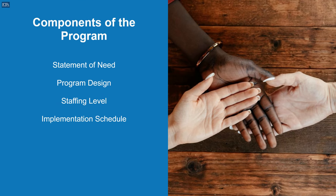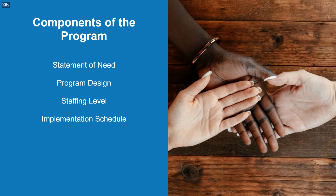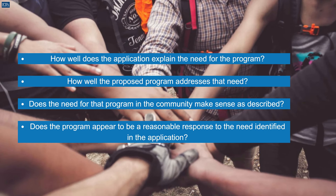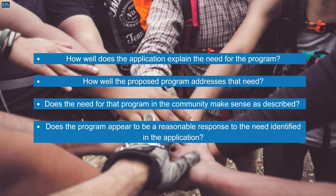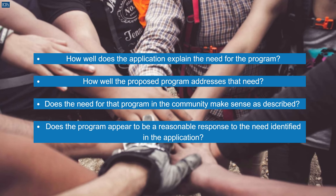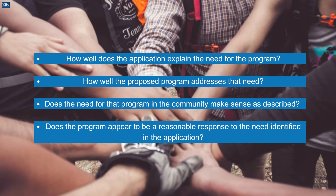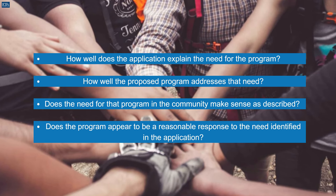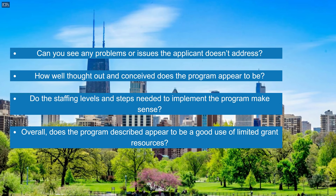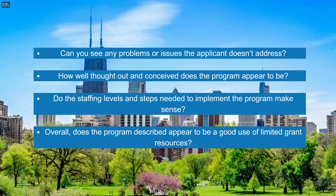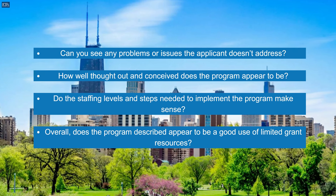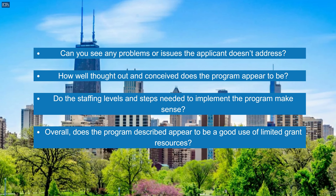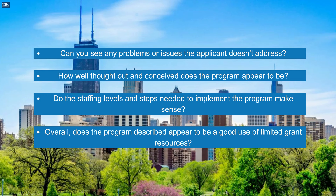Components of the program include the statement of need, program design, staffing level, and implementation schedule. Consider: How well does the application explain the need for the program and how well the proposed program addresses that need? Does the need for that program in the community make sense as described? Does the program appear to be a reasonable response to the identified need? Can you see any problems or issues the applicant doesn't address? How well thought out and conceived does the program appear to be? Do the staffing levels and steps needed to implement the program make sense? Overall, does the program described appear to be a good use of limited grant resources?